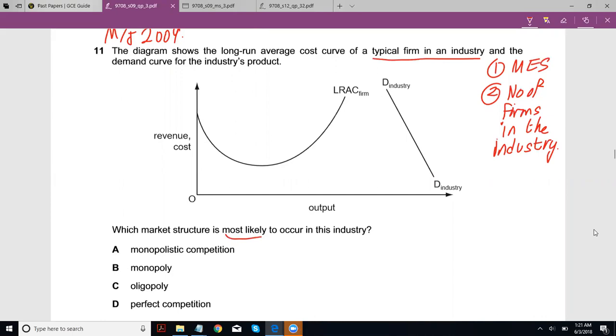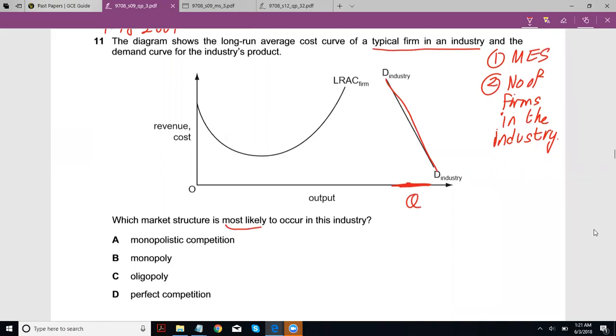If you look at the demand curve, the output that the industry is demanding is going to be somewhere around here, depending on the price level. This is the quantity that the industry wants, the overall demand that exists in the industry. Now you have to look at how many firms can produce at the lowest possible long run average cost and hence completely extract and benefit from the economies of scale.